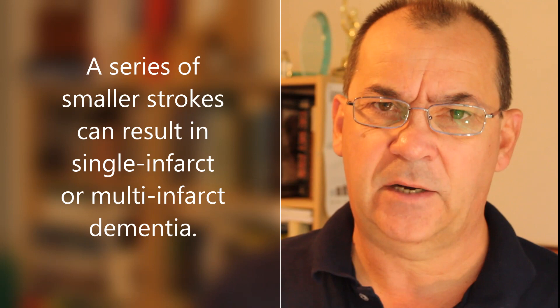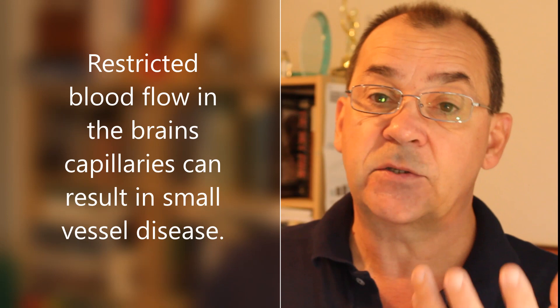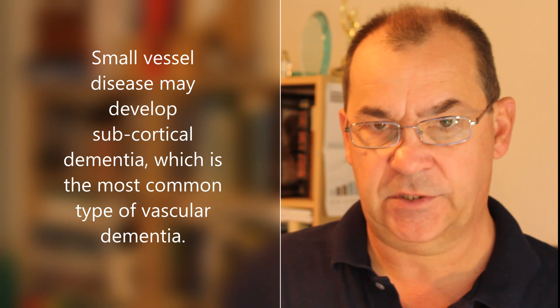When the smallest blood vessels like the capillaries begin to have a restriction of blood flow because they've become stiff or twisted, this is also referred to as small vessel disease — another form of vascular dementia. Individuals affected by small vessel disease in their brain may develop the most common form of vascular dementia, which is also known as subcortical dementia.